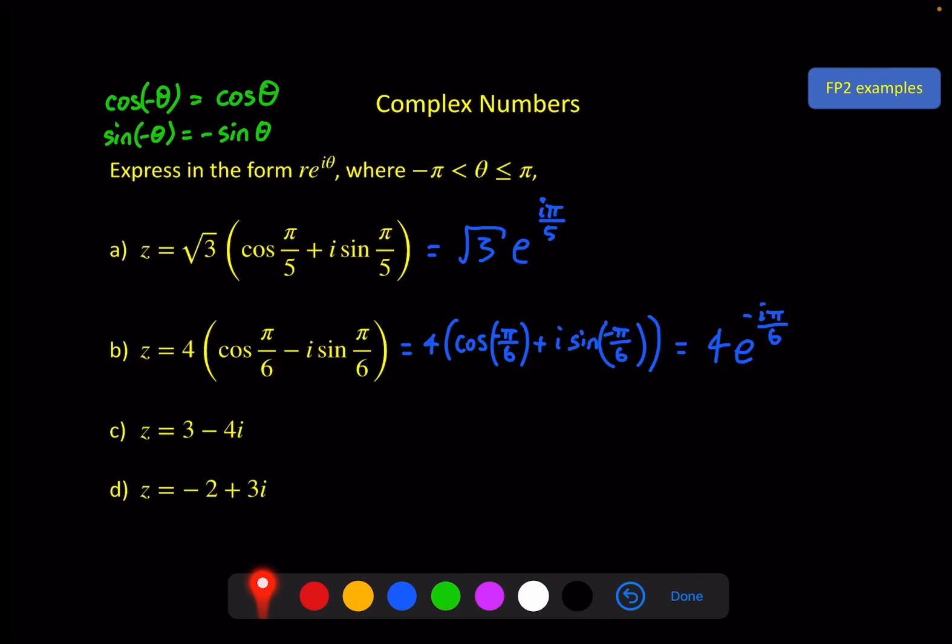For our next two examples, they are in x plus yi form, which means we will need to find the modulus and the argument just as if we were converting it into the modulus argument form, but instead of writing it in this way, we'll write it in this way. But most of the work is the same here.